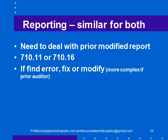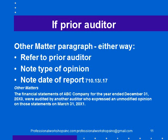Reporting is similar for both: you need to deal with a prior modified report, and basically if you find an error in the prior statements you either fix it or modify your report — more complex if it's a prior auditor, but the same for both types. If there is a prior auditor, you will include an other matter paragraph either way — the same paragraph — referring to the prior auditor, noting the type of opinion and the date of the report. The appendix has an example: 'The financial statements for the year ended [date] were audited by another auditor who expressed an unmodified opinion on those statements on [date].' Very simple, and it applies either way.